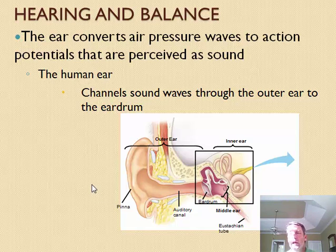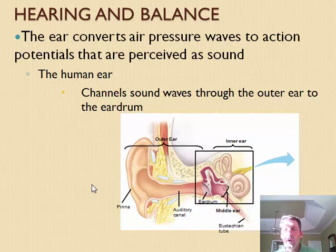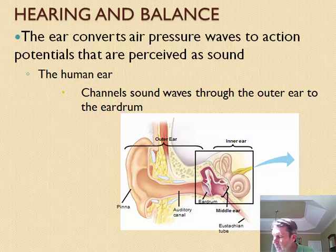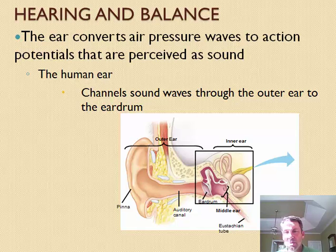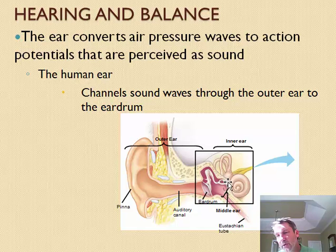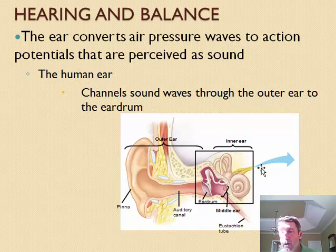This is a chain of bones, and when the drum vibrates it moves those bones — it kind of rattles them. There is a hammer, anvil, and stirrup, and those are named based on their shape: one looks like a hammer, one like an anvil, one like a stirrup. The stirrup is attached to the inner ear, so that chain rattles and then the stirrup is hooked to the outer part of the inner ear. When it rattles, it rattles that outer part of the inner ear.